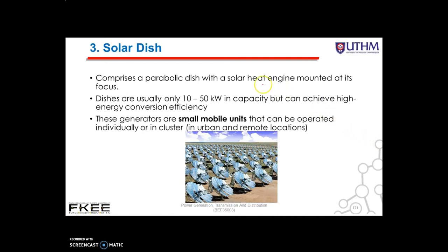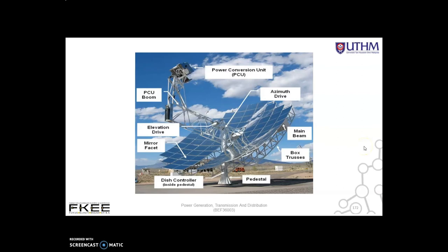The third approach is the solar dish, which comprises a parabolic dish with a solar heat engine mounted at its focus. Dishes are usually only 10 to 50 kilowatts in capacity but can achieve high energy conversion efficiency. These generators are small, mobile units that can be operated individually or in clusters in urban and remote locations. Dish or engine systems use a parabolic dish of mirrors to direct and concentrate sunlight onto a central engine that produces electricity. The dish or engine system is a concentrated solar power (CSP) technology that produces smaller amounts of electricity than other CSP technologies, typically in the range of 3 to 25 kilowatts.